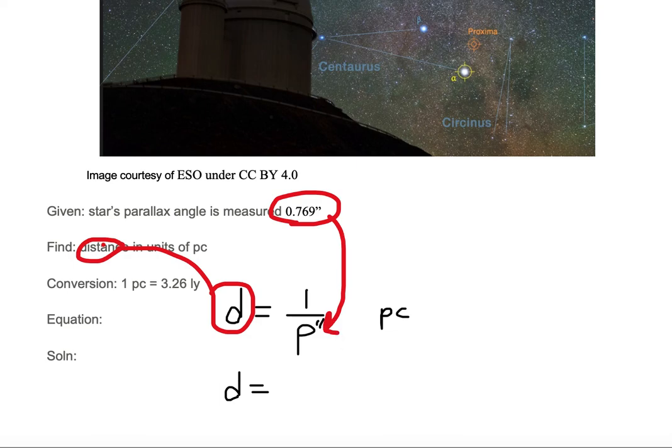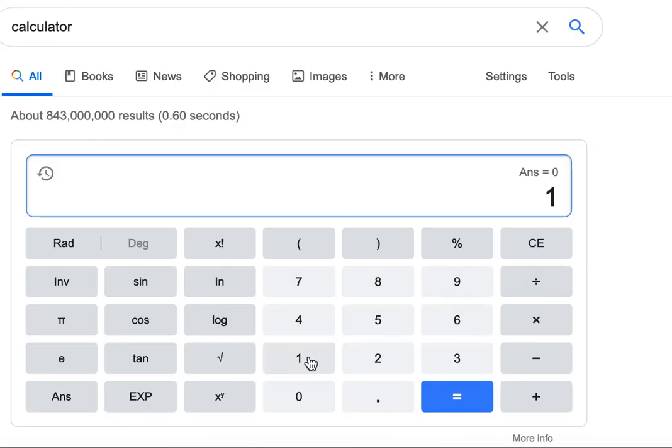So all we need to do is put the values in. We've got 1 divided by 0.769, and we're going to put that in. We need to get out a calculator. I'm going to use the Google calculator. 1 divided by 0.769.